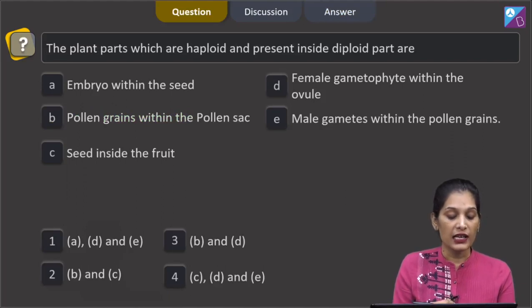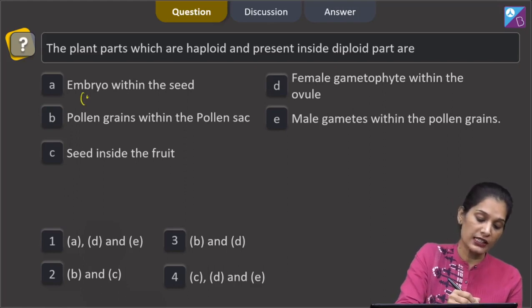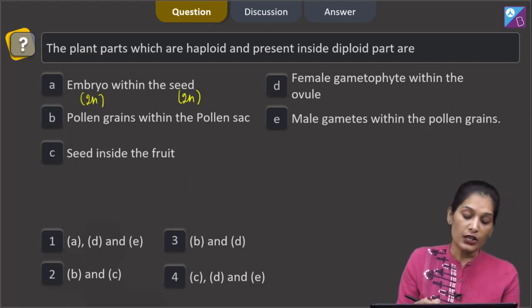This question says the plant parts which are haploid and present inside diploid part are embryo within the seed. Embryo is diploid, seed is again diploid.